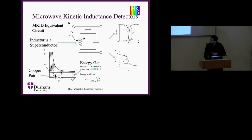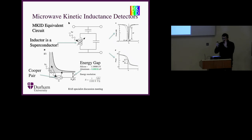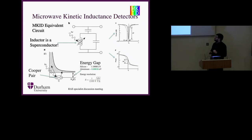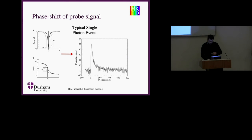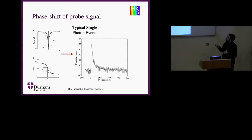The kinetic inductance effect changes the inductance in the circuit, which changes the resonant frequency, and you can sense that. The magnitude of that change is related to the number of Cooper pairs broken: if a photon comes in with half the energy, to first order you break half as many Cooper pairs and get half the effect. How well you can determine that energy change is how well you can determine the energy of the incoming photon. These frequencies are tuned to the microwave regime — around 4 to 8 GHz — which enables use of software-defined radio.